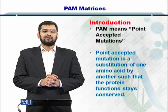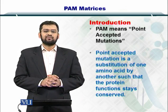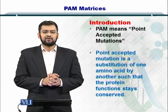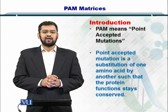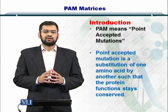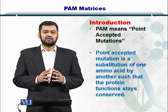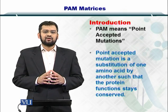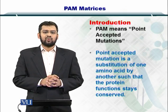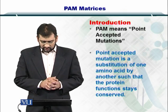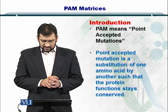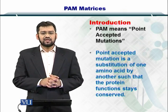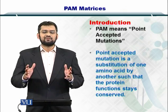Let's take a look at the PAM scoring matrix. PAM is essentially the Point Accepted Mutations matrix. It means that for a given site in a protein, the probability of one amino acid being substituted is 1%. Simply put, a point accepted mutation is a substitution of one amino acid by another such that the function of the protein stays the same.